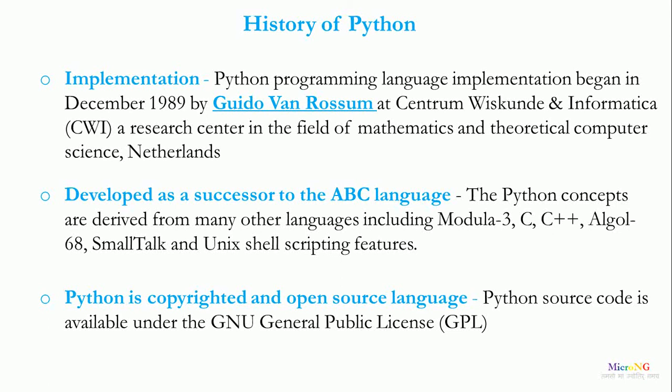Python is a copyrighted and open source language. Python source code is available under the GNU General Public License, GPL. Thus, Python is an example of an open source language.